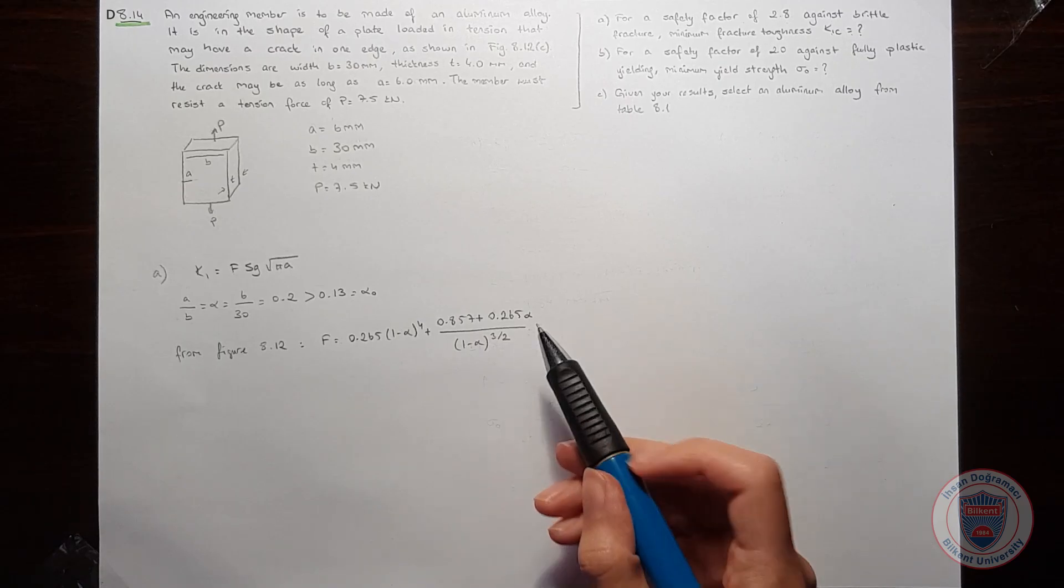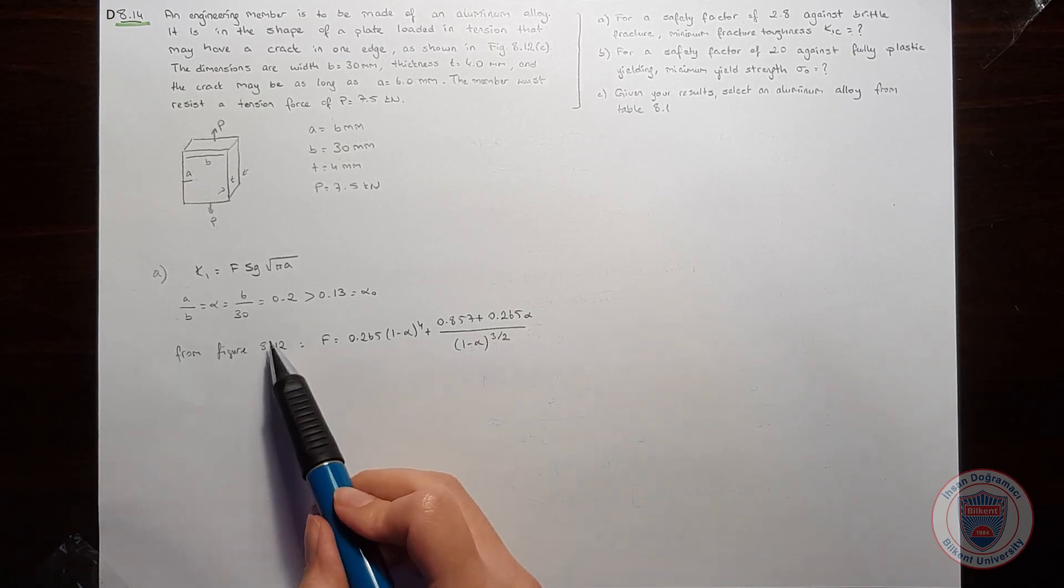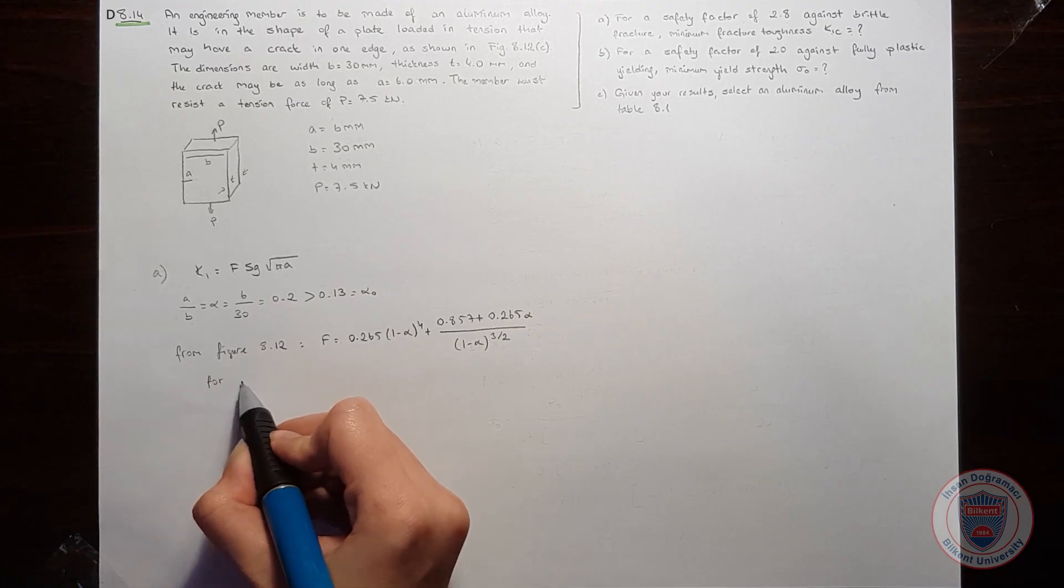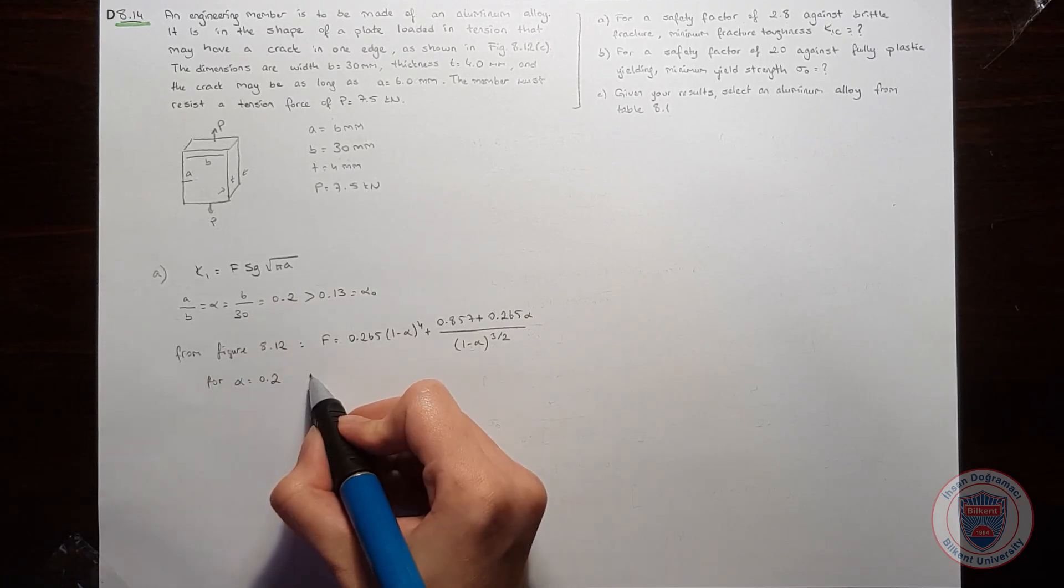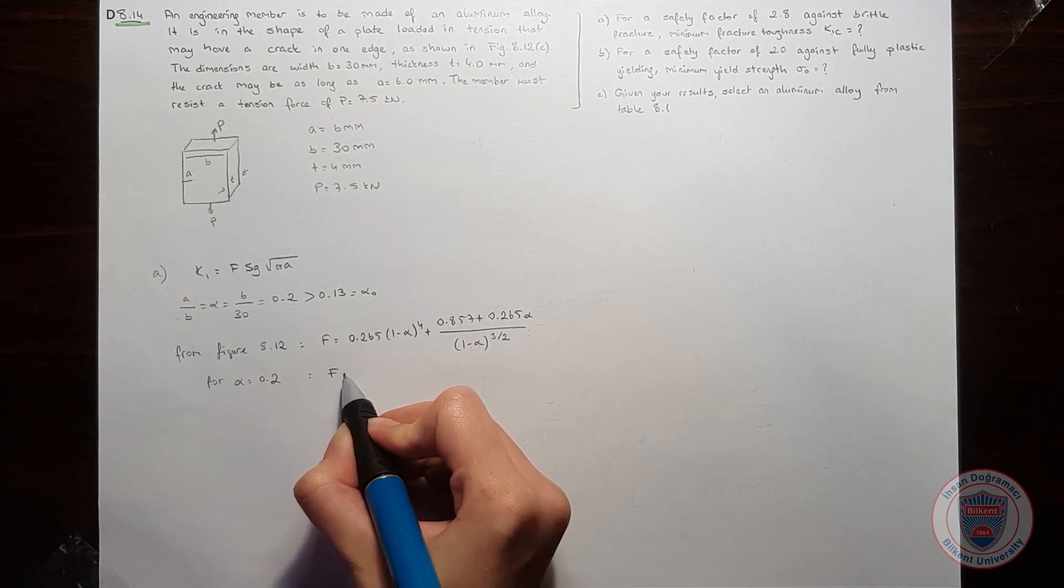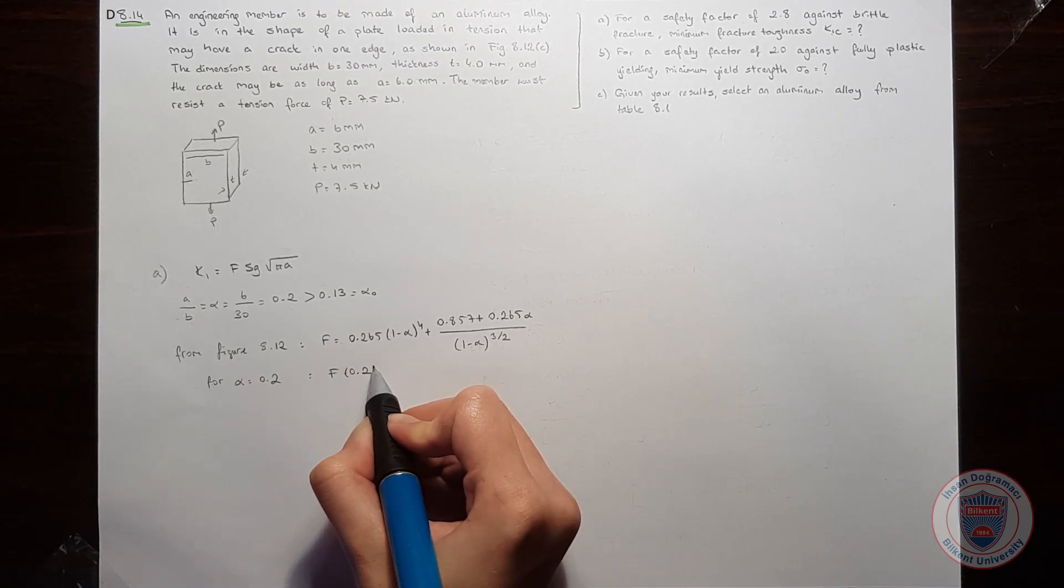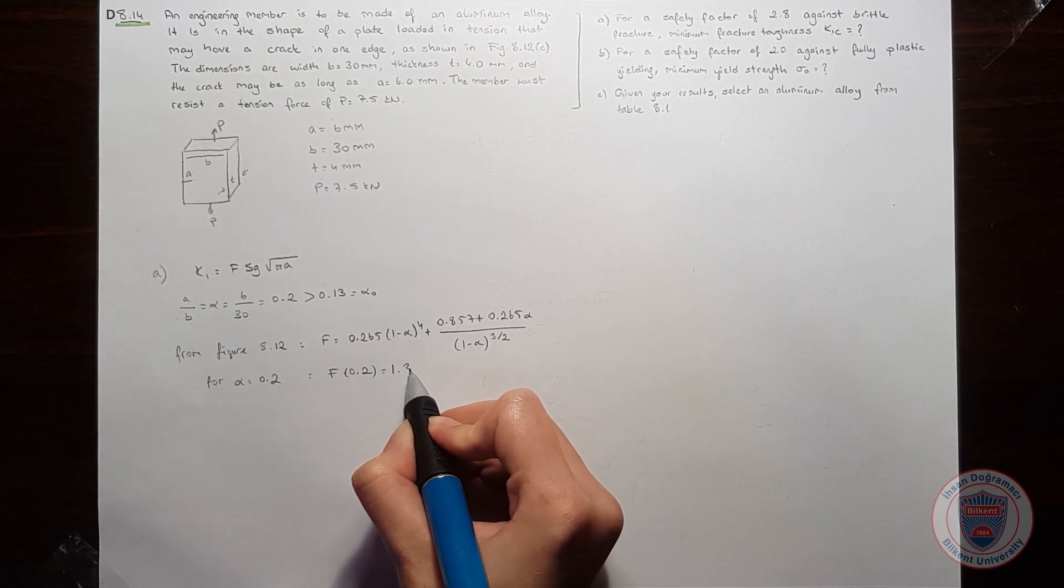You can find this equation from your book when you look at this figure. And for alpha is equal to 0.2, we have a form factor which is 1.38.